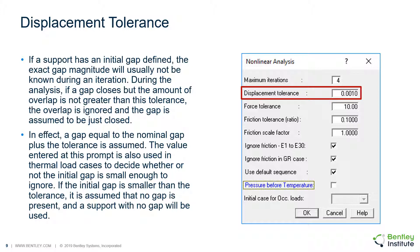If a support has an initial gap defined, the exact gap magnitude will usually not be known during an iteration. During the analysis, if a gap closes, but the amount of overlap is not greater than the displacement tolerance, the overlap is ignored and the gap is assumed to be closed. In effect, a gap equal to the nominal gap plus the tolerance is assumed.